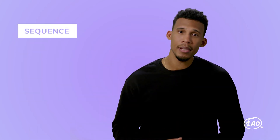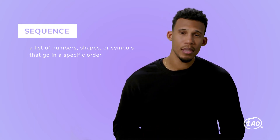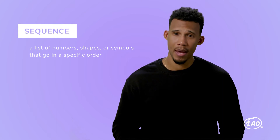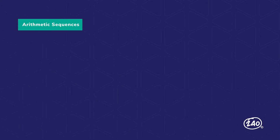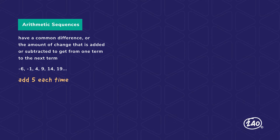A sequence is a list of numbers, shapes, or symbols that go in a specific order. Most sequences follow some sort of pattern. We're looking at three types. First, arithmetic sequences — usually the easiest. They have a common difference between terms, meaning you add or subtract the same number every time. In this example, we add five to get from one term to the next.